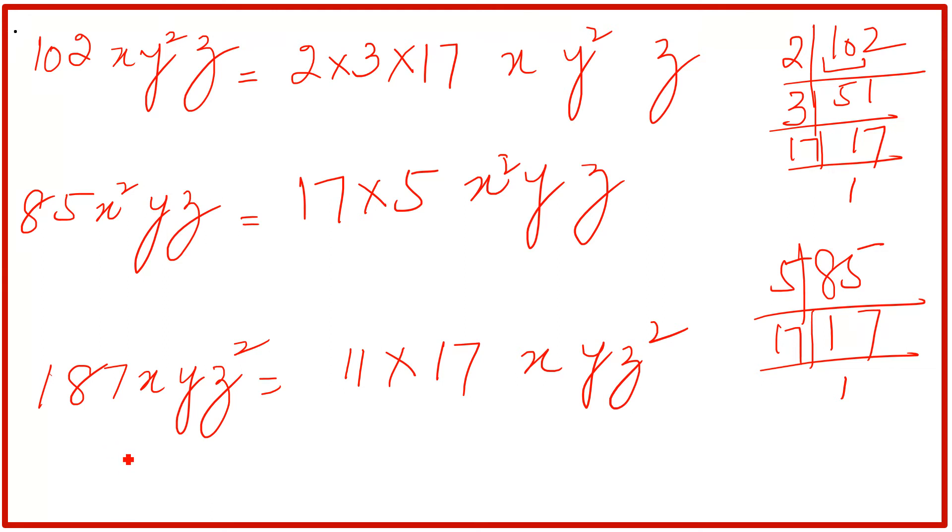First I will write down HCF. HCF means maximum, the highest number which is common among these three. So this is 17. And then x is here, 2x here, 1x here. So we will take the minimum which is common, only common. X^2 because we do not have x^2 here. That is why we cannot take x^2. Only 1x, 1y and 1z. In HCF, minimum number which is common.